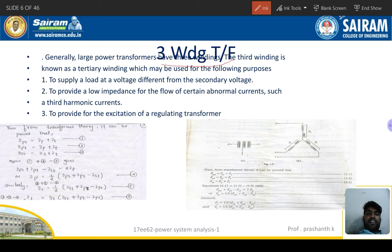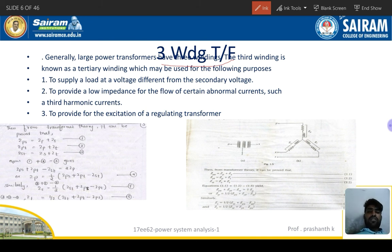Generally, larger power transformers use the three-winding configuration. Another everyday example is the mobile charger — if you disassemble it, there is a transformer inside, because it converts 230 V supply down to 3.7 to 4 volts for the mobile battery. This is why we must have basic knowledge about transformers as electrical engineers.